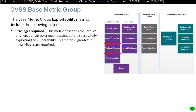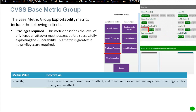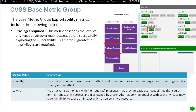The next metric is privileges required. This metric describes the level of privileges an attacker must possess before successfully exploiting the vulnerability. The metric score is greatest if no privileges are required. First, None: the attacker is unauthorized prior to the attack and does not require any access to settings or files to carry out an attack. Low: the attacker is authorized with privileges that provide basic user capabilities, affecting only settings and files owned by a user, or may only cause impact to non-sensitive resources.